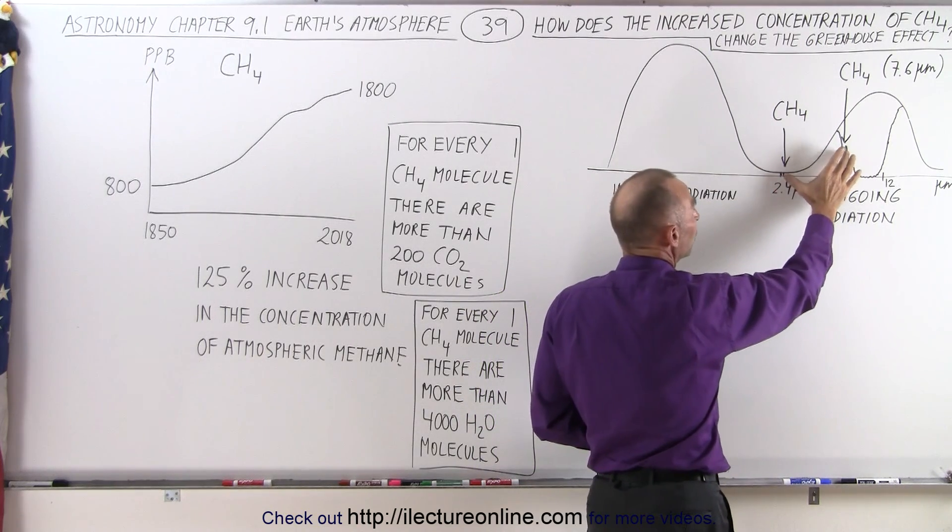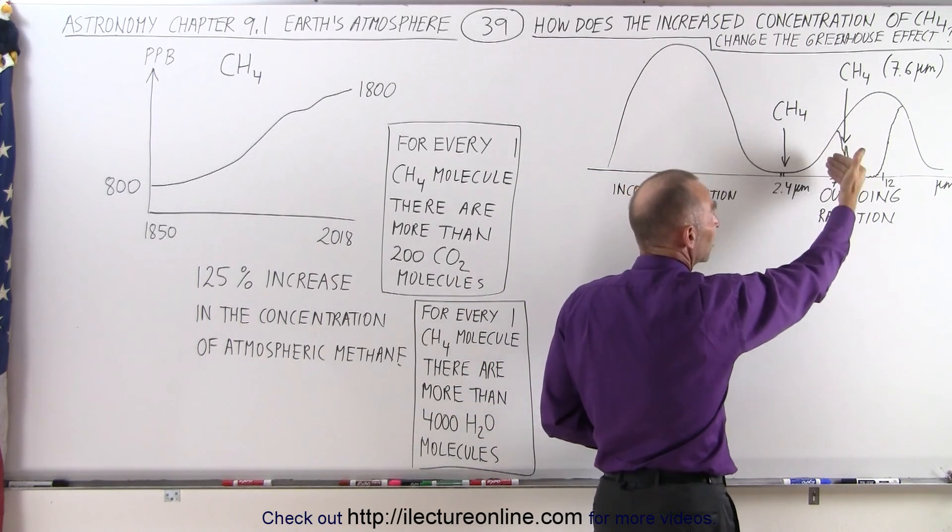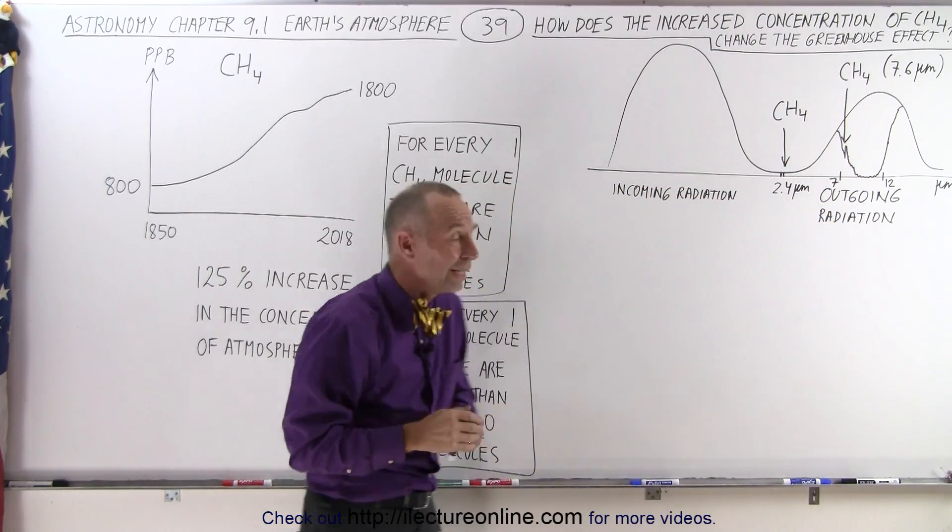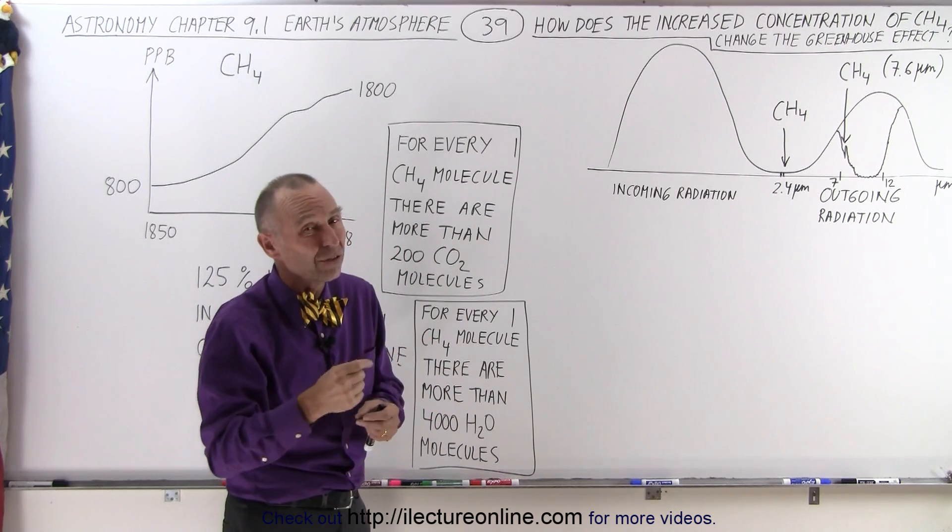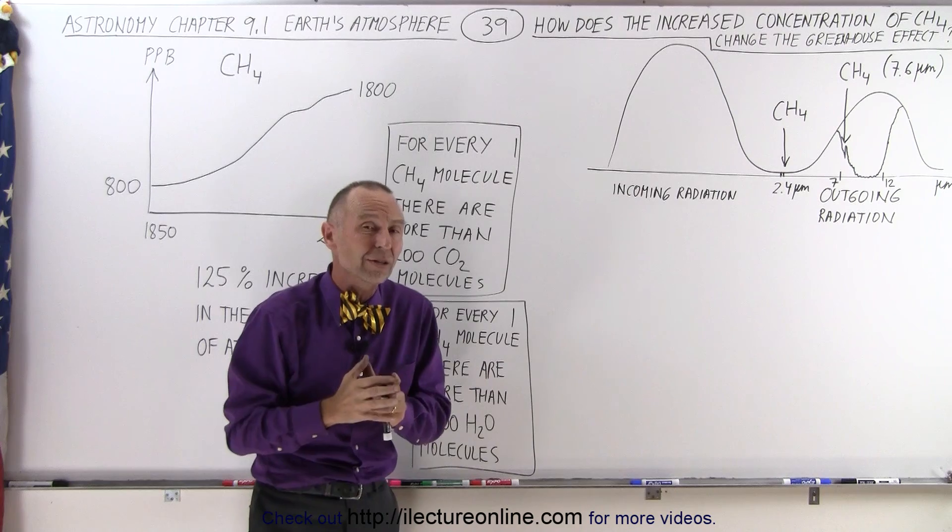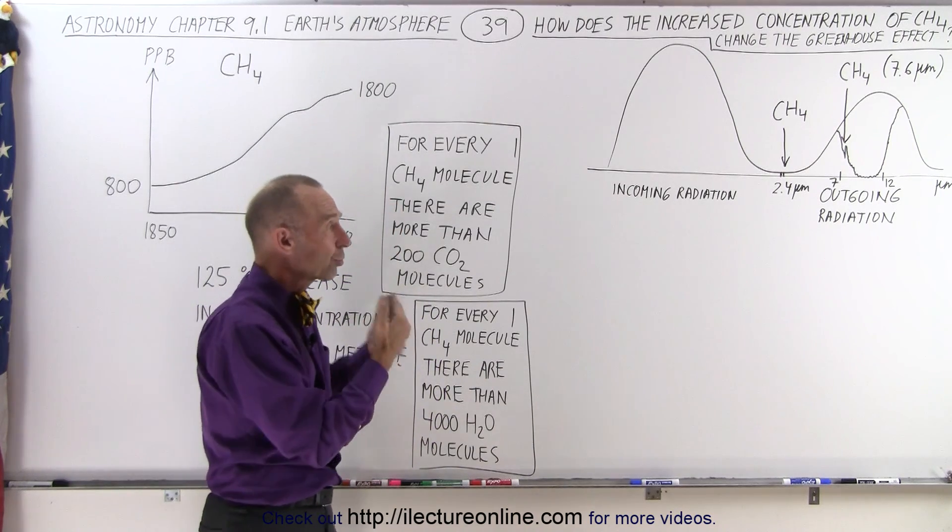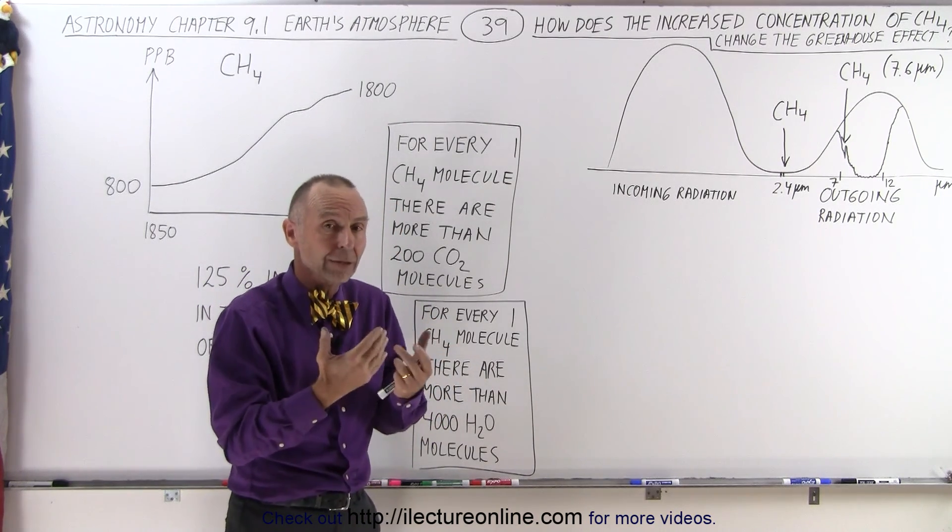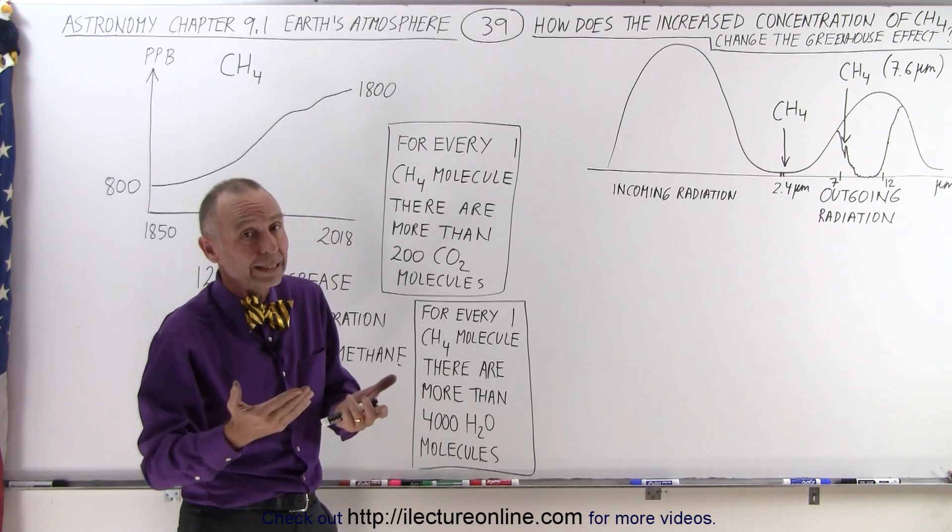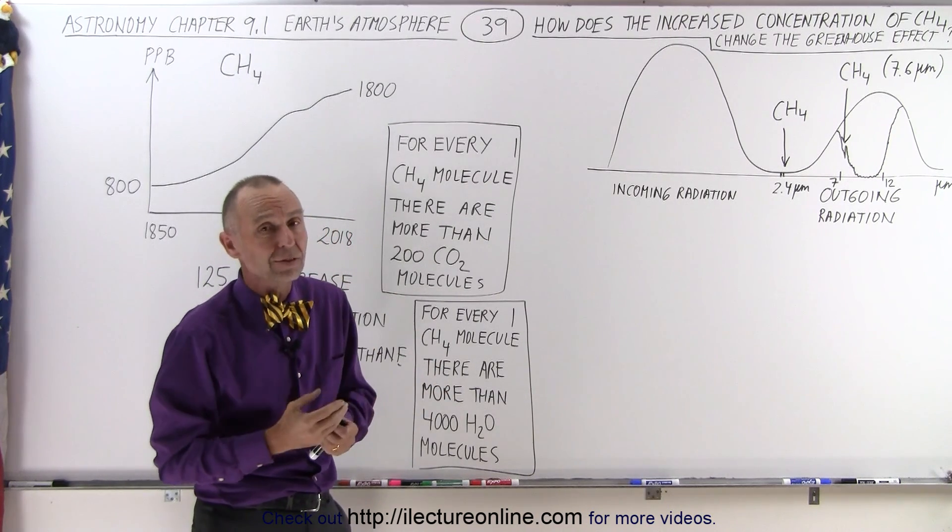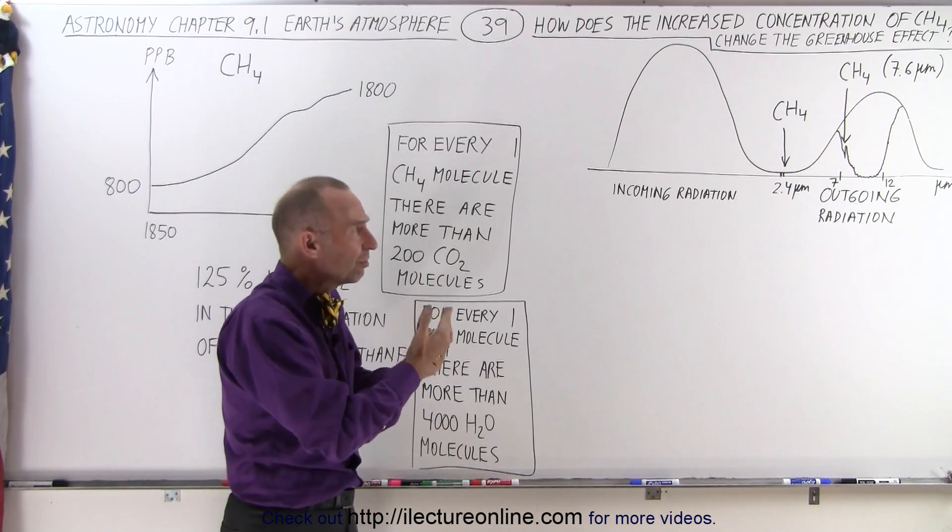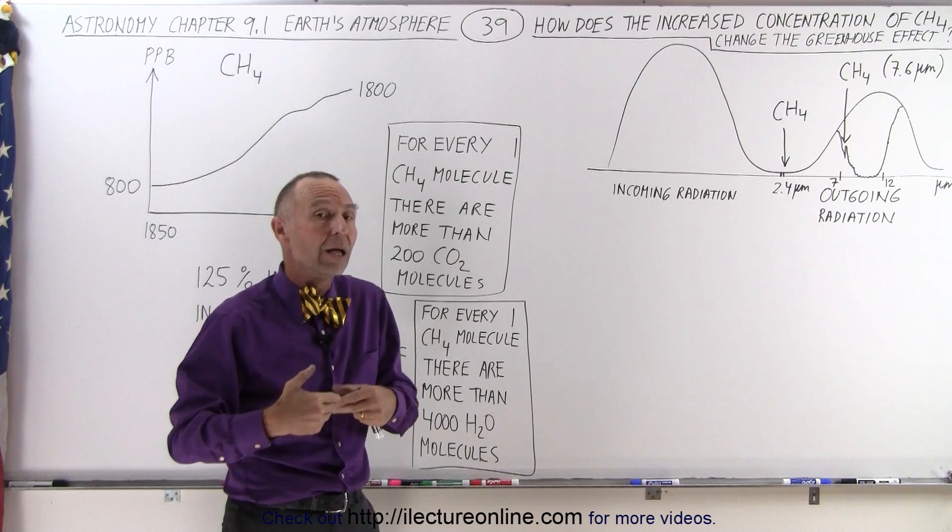So since these are the only two places where methane can hold back the radiation, methane doesn't appear to be doing a whole lot as far as keeping the Earth warm. It's a contributing factor, but it's a relatively small factor. It's probably somewhere in the 1% of the total greenhouse effect that's currently being contributed by methane versus the other 99% or close to 99% by water vapor and carbon dioxide. So it's actually a very small contributor and it looks like the increases in methane are not going to make a lot of difference.